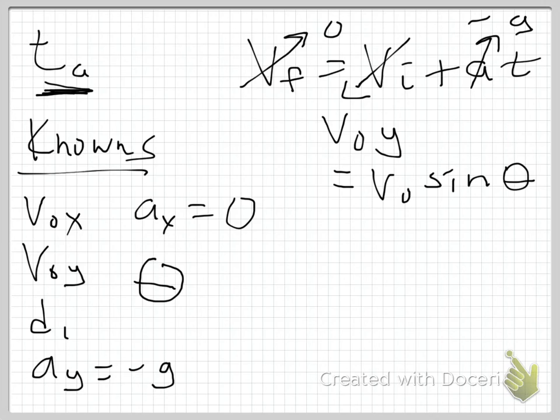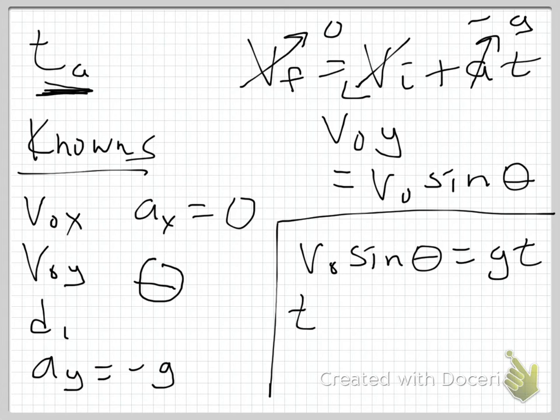If I rearrange this equation, I get v₀ sin θ = g·t. Of course, that means t - and this is t_apex, I'm subscripting with an A because this is my time to the apex - equals v₀ sin θ over g.